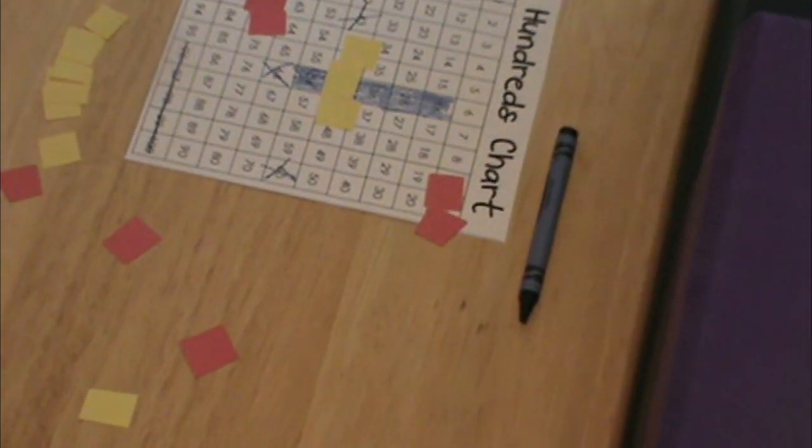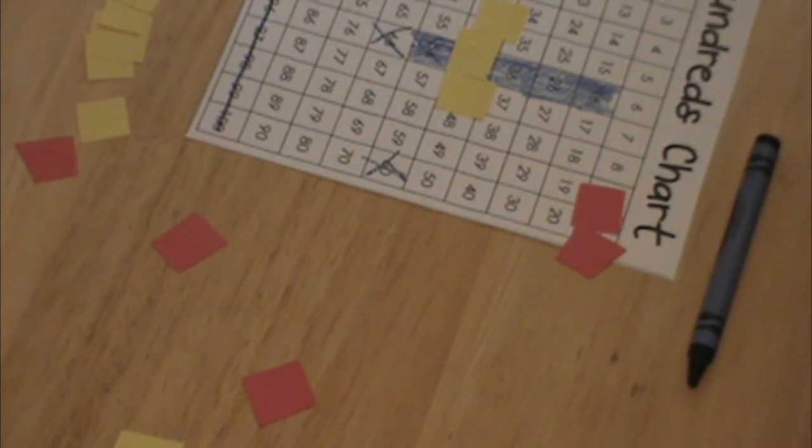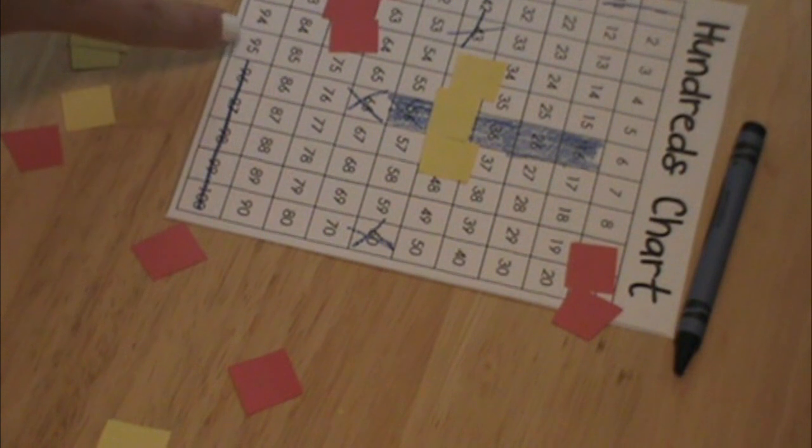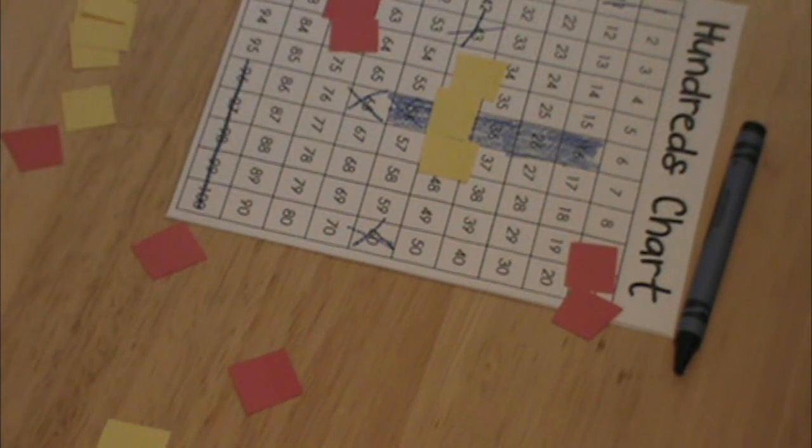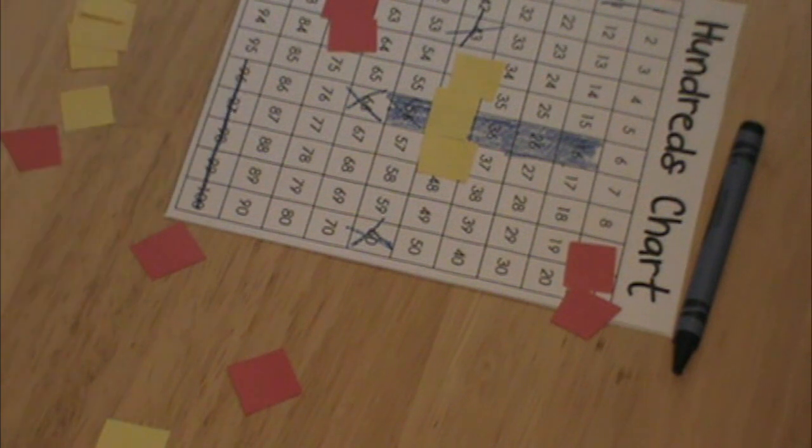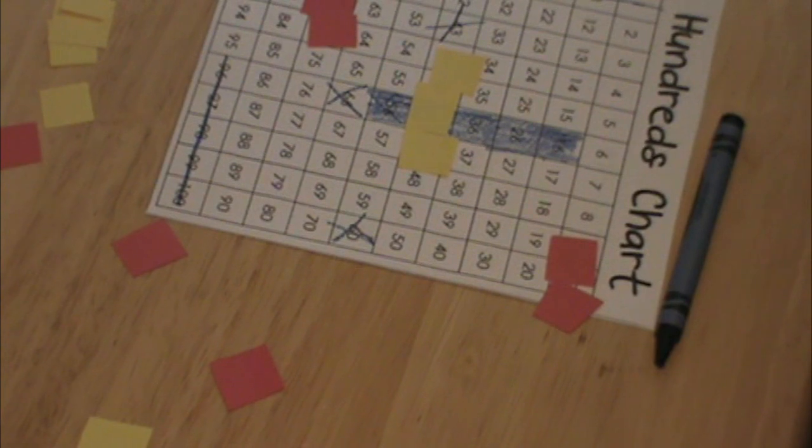So if a student or your child hits a ship, and their ship gets sunk, I had them cross it out with a straight line to signify that their ship was sunk. And you're just going to keep playing until someone wins.